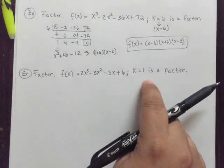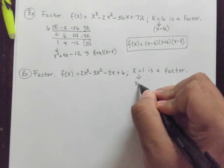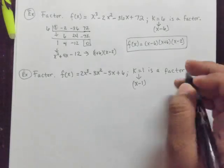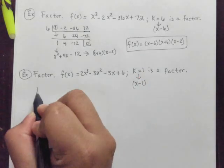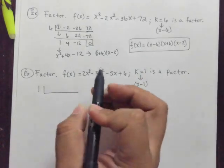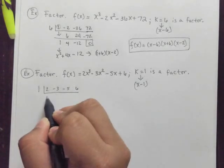We are given that 1 is a factor. Where did this guy come from? This guy came from the fact that we had x minus 1 as a factor. So we're going to do the synthetic with 1. We've got 2, we've got negative 3, negative 5, and we've got 6.